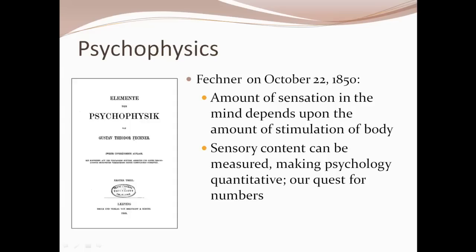The story goes that Fechner had been ill for a period of his life and was close to death, in and out of consciousness. Then on October 22nd, 1850, the fever broke, he rose up in bed, and declared — roughly translated from German — 'the amount of sensation in the mind depends on the amount of stimulation in the body.' He had this revelation on October 22nd, 1850, and psychology departments around the world celebrate Fechner Day on that date every year.